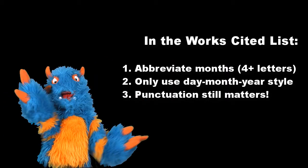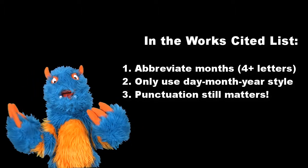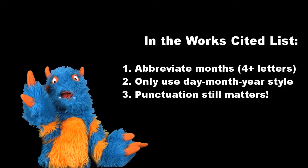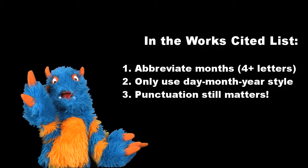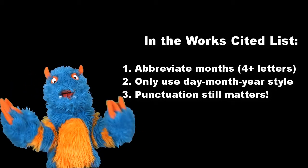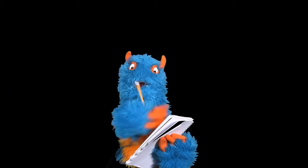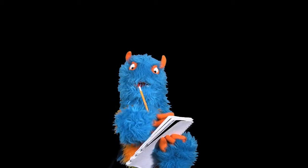Months with names longer than four letters are always abbreviated. We only use the day-month-year style, as this minimizes the number of commas we need, and punctuation still matters. Include as much detail as you have about the dates in your works cited list. If you have a specific time, record that as well.